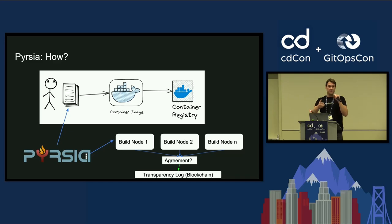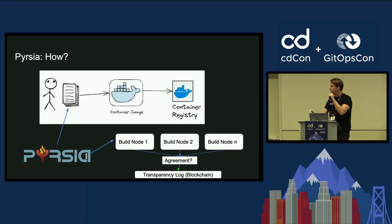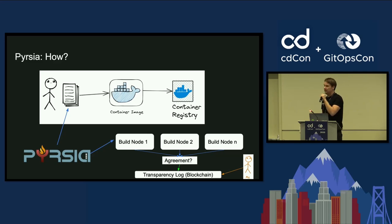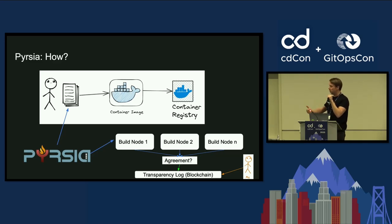If the build nodes come to an agreement, then that is written to the transparency log on the blockchain. The blockchain is an immutable source of truth, so once your code or your image is there, it's not changing. And I know I can trust that because of Persia's build network — I've had a consensus across those build nodes that it was true and it was the case.